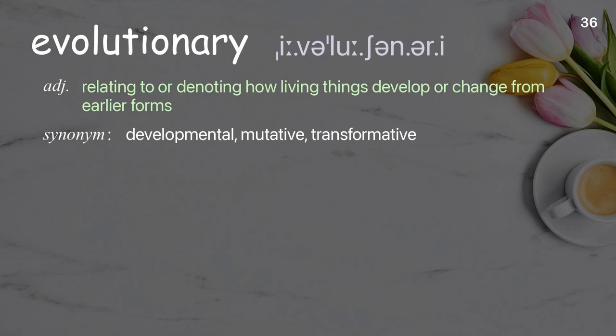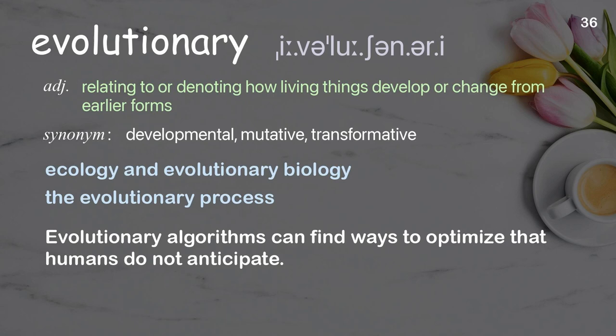Evolutionary. Relating to or denoting how living things develop or change from earlier forms. Examples: ecology and evolutionary biology, the evolutionary process. Evolutionary algorithms can find ways to optimize that humans do not anticipate.